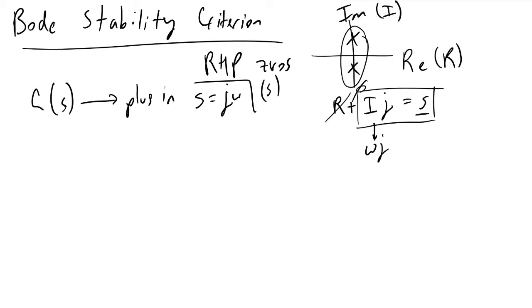To work through a generic example, let's consider a first-order system where G of S equals some process gain K divided by tau S plus one. We plug in S equals J omega, so G of J omega is equivalent to K over tau times J omega plus one.